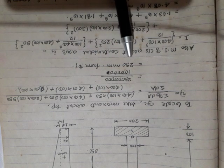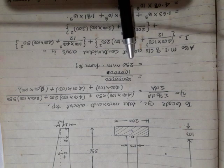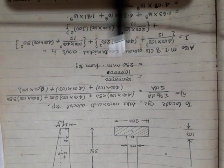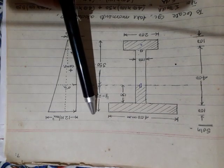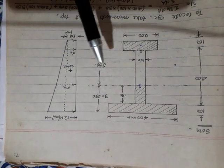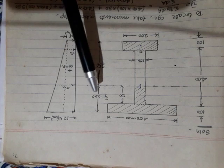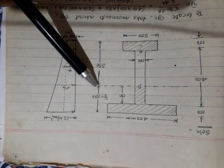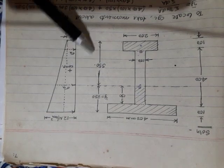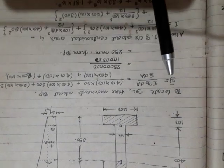Therefore, y-bar, or the CGC, lies at a distance of 250 mm from the top. This has been marked on the section. Since y-bar is 250 mm from the top, the distance from the CGC to the bottom is automatically 350 mm.